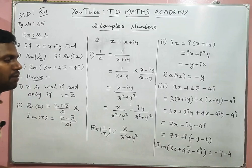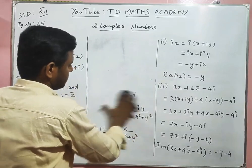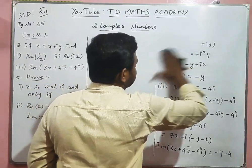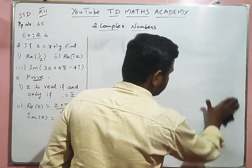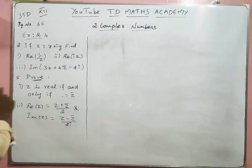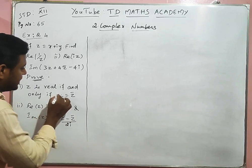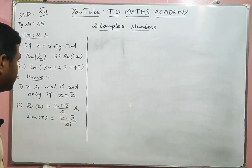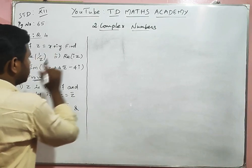Now for sum 5, which is a prove-that question. This involves Property 8 and Property 9 from page 62 of the book. Property 8: Z is real if and only if Z = Z̄. Property 9: Z is imaginary. We need to prove these properties.